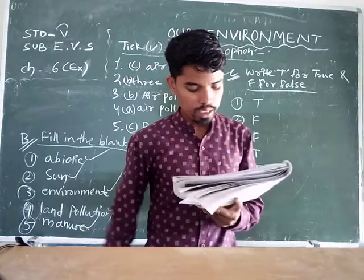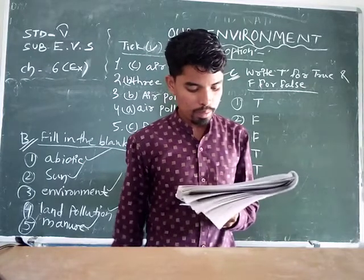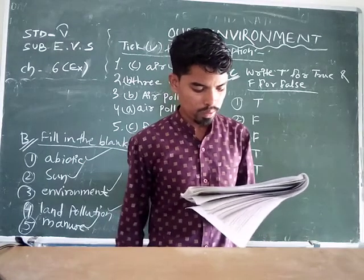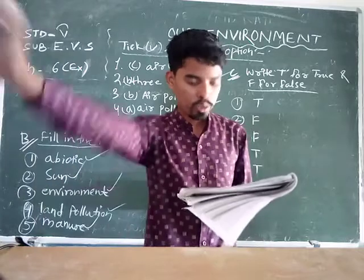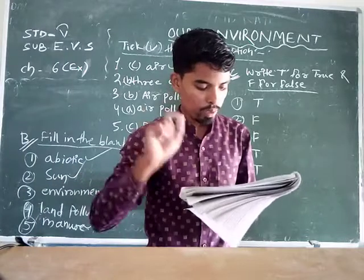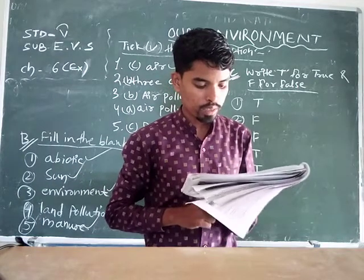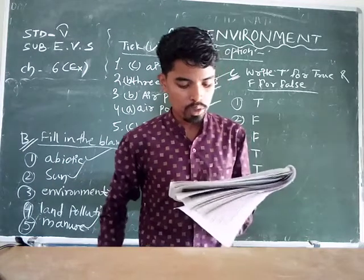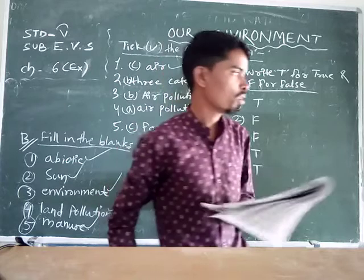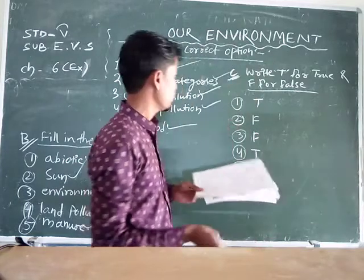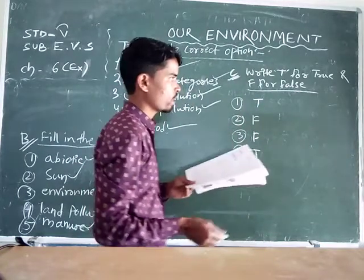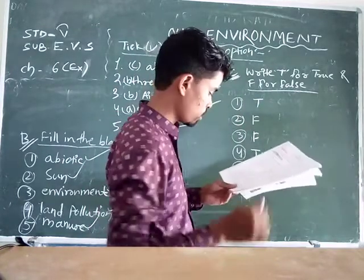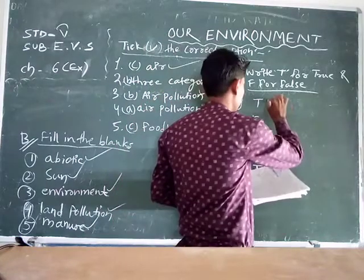Now for the true or false section. Number one: the abiotic environment consists of non-living things — this is TRUE. Abiotic environment consists of non-living things like soil, air, and sunlight.